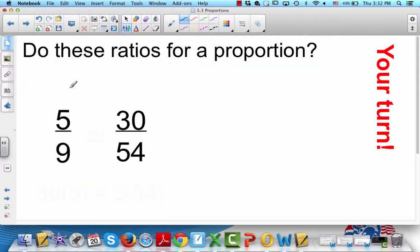Your turn. You do this one. Do these ratios form a proportion? Remember what you're going to do is multiply across - cross multiply. Multiply the 5 times the 54 and the 9 times the 30. Your turn.